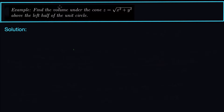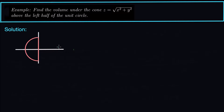This example says: find the volume that's under the cone, but above the left half of the unit circle. Looking at this region of integration, the left half of the unit circle is right here. The unit circle goes all the way up to y equals 1, down to y equals negative 1, and over to x equals negative 1.